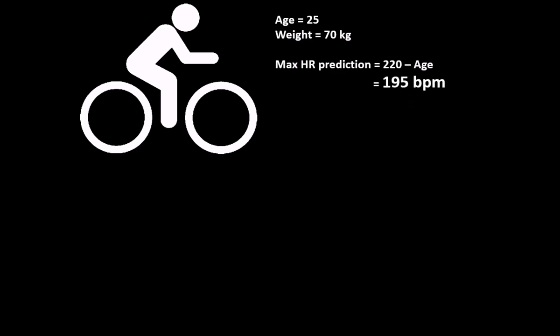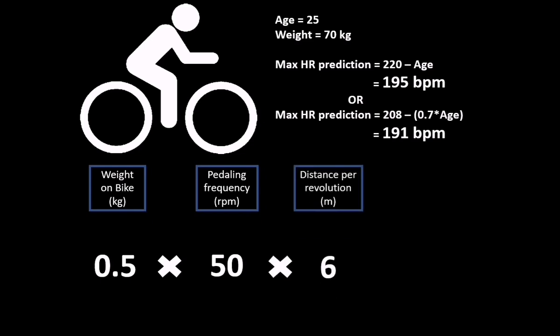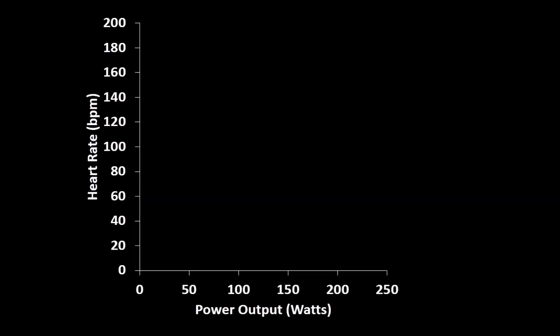Like every YMCA protocol, she begins the exercise test with a 0.5 kilogram load on the bike, and when pedaling at 50 rotations per minute and knowing the standard distance of one revolution to be six meters for the Monarch bikes, then we can calculate that she is pushing against a 150 kilogram-meter per minute load, which is also the equivalent of one kilopound of force or 25 watts if we divide this number by 6.12. Her heart rate was 83 beats per minute after the first three-minute stage.